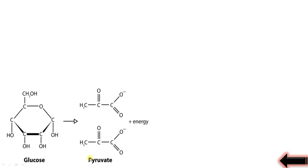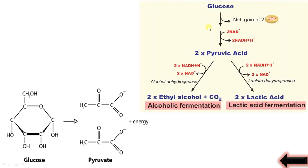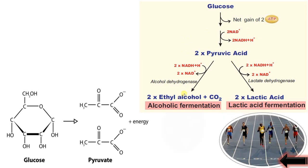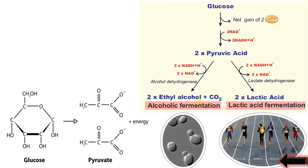Question number three: is glycolysis a partial oxidation of glucose? In glycolysis, this six-carbon glucose is converted to two three-carbon pyruvate molecules with the release of energy as ATP. The actual reaction is: glucose is converted to pyruvic acid.